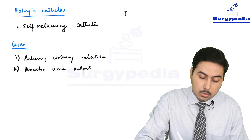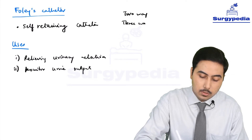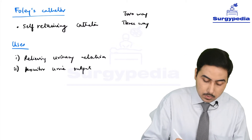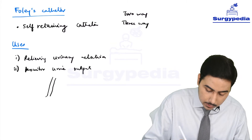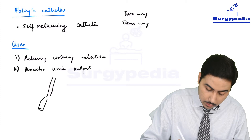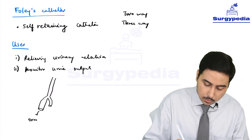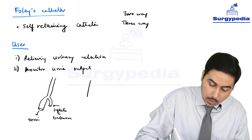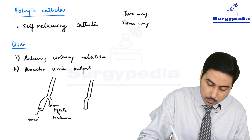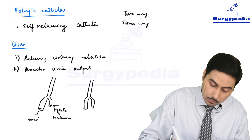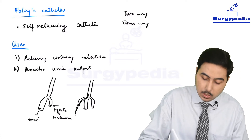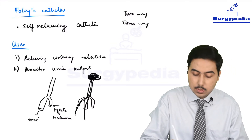Foley's catheter can be of two types: two-way Foley's or three-way Foley's. In a two-way Foley's, the catheter has a main channel used to drain urine, and a side channel used to inflate the balloon. In a three-way Foley's, there is an additional side channel used for irrigation — we insert fluid via this channel into the bladder, it collects all debris, clots, and so on, and then drains out through the main channel.